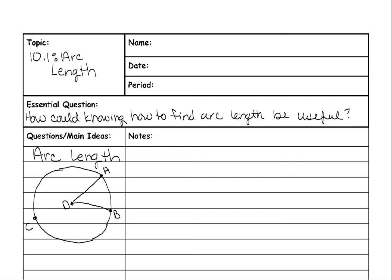So this circle is called circle D, that is the name of the circle. It would be a circle with a dot in the middle and then the letter by it.